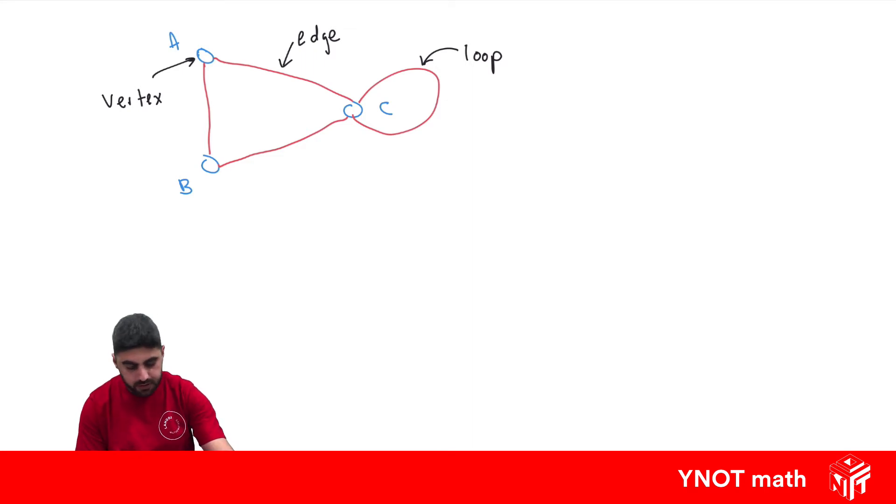When you draw them, the edges don't necessarily have to be straight. I could have drawn this network just like this - connecting A and B like that, A and C like that, B and C like that, and done the loop like so. They don't have to be straight.